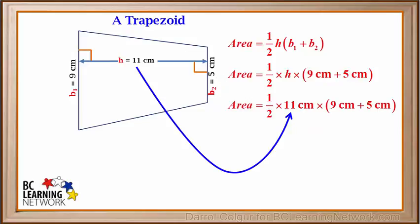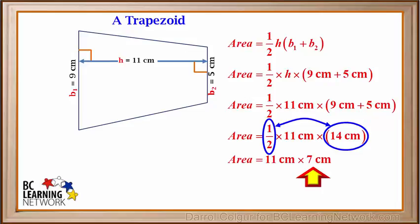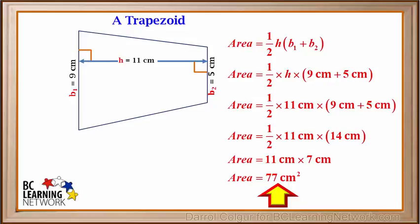The height H is 11 cm. 9 plus 5 is 14 cm. One half times 14 is 7 cm. So the area is 11 cm times 7 cm, which comes out to 77 cm squared.